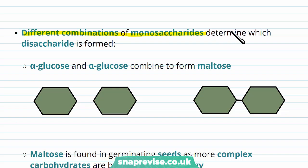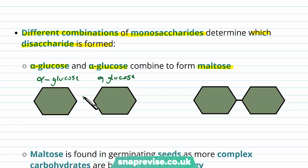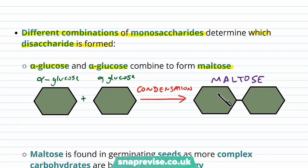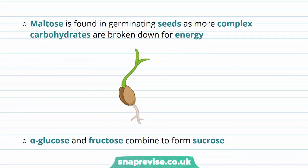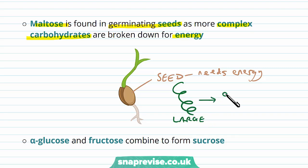Because there are different combinations of monosaccharides, we can get different types of disaccharides. For example, if we take two monomers which are both alpha glucose and combine them in a condensation reaction, we form the disaccharide called maltose. Maltose can be found in germinating seeds — seeds that are just beginning to sprout and grow. As more complex carbohydrates get broken down for energy inside the seed, larger carbohydrates are broken into disaccharides which are maltose molecules, used by the seed for energy.